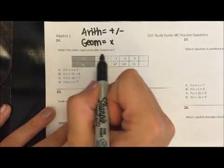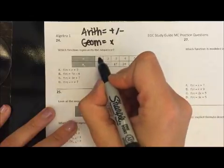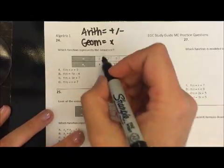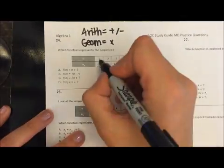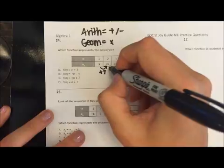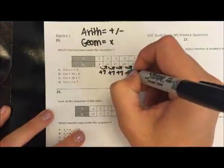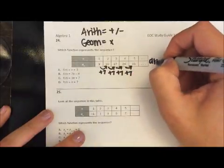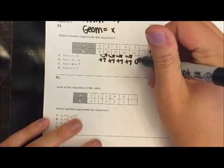It's asking which function represents the sequence. So I see that the top are just my term numbers, so first term, second term, third term, and so forth, and the bottom are my term values. I can see that in order to get from 3 to 10, I'm adding 7. If you get from 10 to 17, I add 7, and that pattern continues. So I know that this is an arithmetic sequence. And then I'm going to use that to help me write a formula.